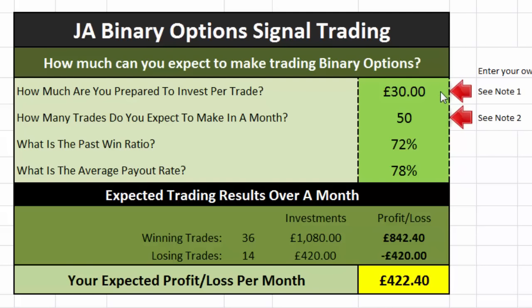So the two figures you really want to play with are G4 and G5 — how much can you invest per trade and how many trades do you expect to make in a month? If we look at these figures here, just £30 invested per trade with 50 trades per month, a 72% win rate, and a 78% payout, you will make £422.40 profit per month. You'll have 36 winning trades making an £842 profit and 14 losing trades losing you £420, giving an overall profit of £422.